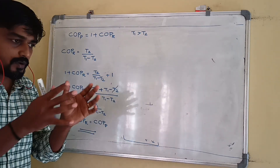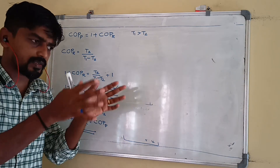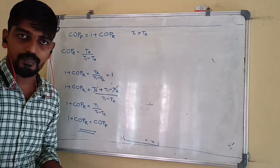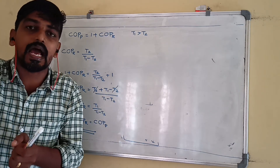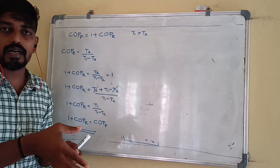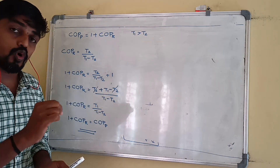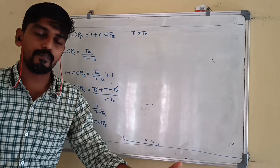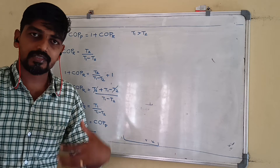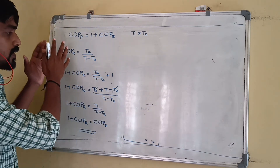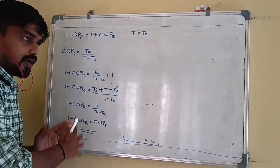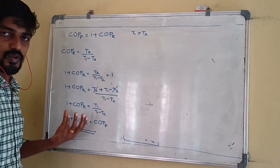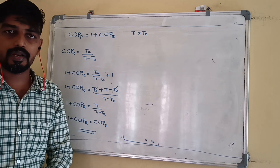When we know the COP of a refrigerator, we can find the COP of the heat pump by adding 1. The difference is in the numerator: for the refrigerator, we consider heat absorbed from the cold body Q2; for the heat pump, we consider heat delivered to the hot body Q1. That is the relationship between COP of heat pump and COP of refrigerator.